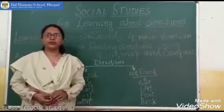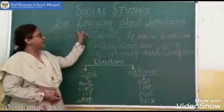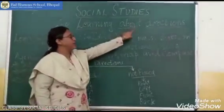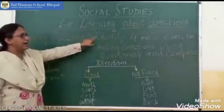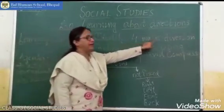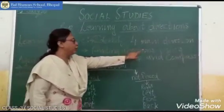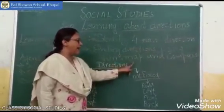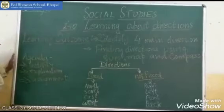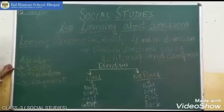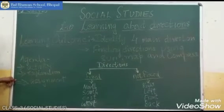Welcome children to our social studies class. Today we will be doing lesson 10, learning about directions. In this chapter we will learn to identify the 4 main directions, finding directions using the sun, map, and compass. First we will be doing an activity, followed by an explanation, and then we will discuss the assignment.